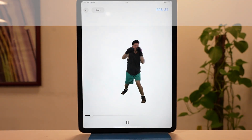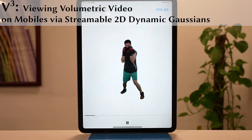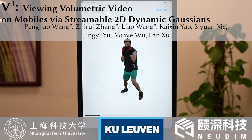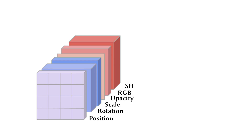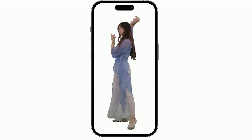We introduce V-Cube, an approach for viewing high-quality volumetric videos rendered on mobile platforms with streamable 2D dynamic Gaussians. We use multiple videos encoded with the hardware codec to represent the scene. Each video represents one attribute of all Gaussians within a group. We map the same Gaussian attribute to the same pixel positions across different frames. A single pixel in multiple videos can reconstruct a Gaussian, and multiple such Gaussians form a Gaussian splat that represents a person. Through projection and blending, we achieve rendered dynamic human-centric performances.